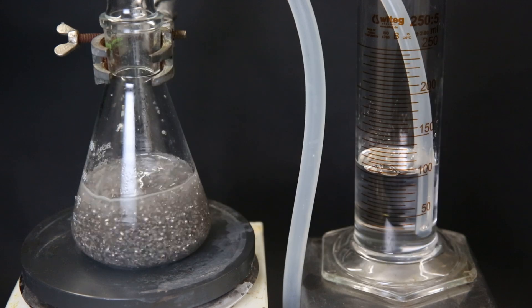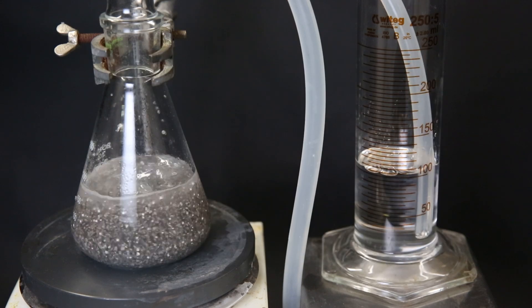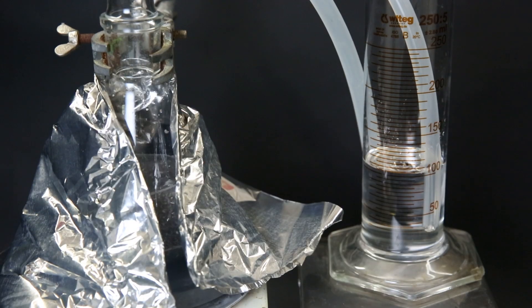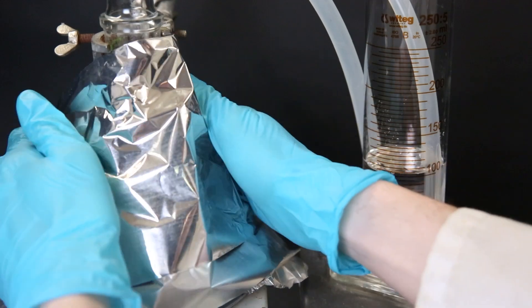To get the flask to 200°C I need to insulate it well since the contact surface is relatively small. So I put up multiple layers of aluminum foil to trap the heat and then I leave it to react overnight.